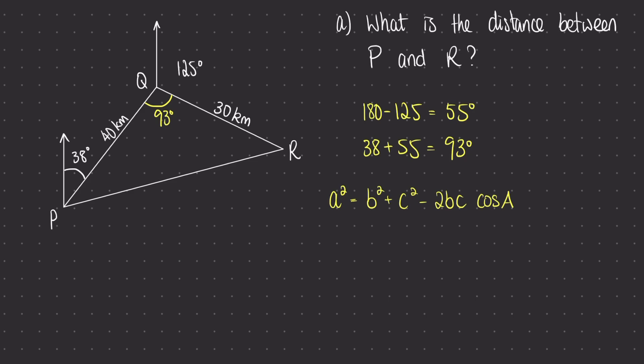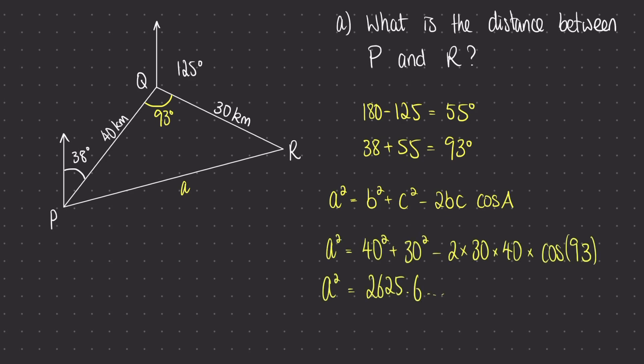Now we can use the cosine rule because we have a side, an angle, and another side sandwiched there. We're after the length PR, so that's going to be our lowercase a, and the angle in focus is capital A. Plugging in what we know, that works out to approximately 2625 and further decimals, so I'll keep that in my calculator and square root both sides. Rounding to three significant figures, the length of PR is 51.2 kilometres. This makes sense as PR is slightly longer than the other two sides of 40 and 30, which are in the same region.